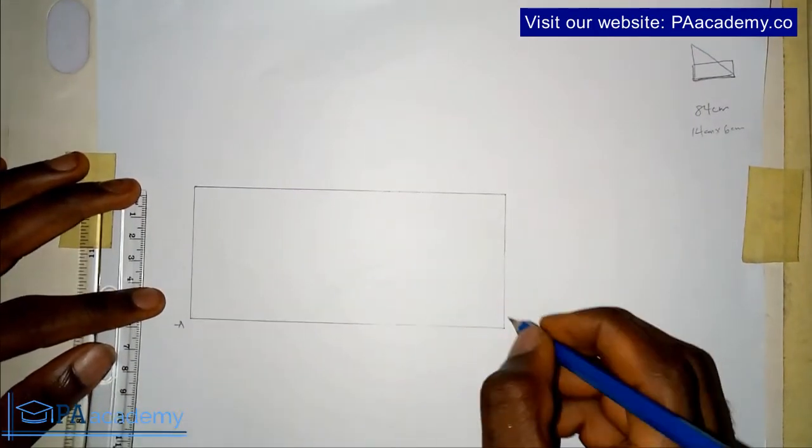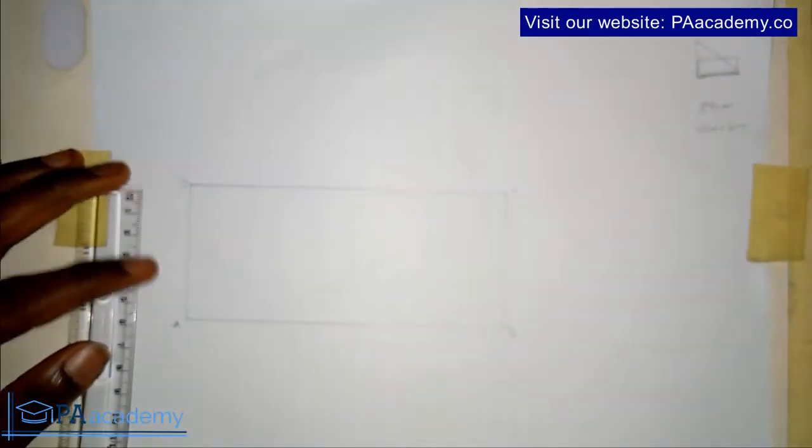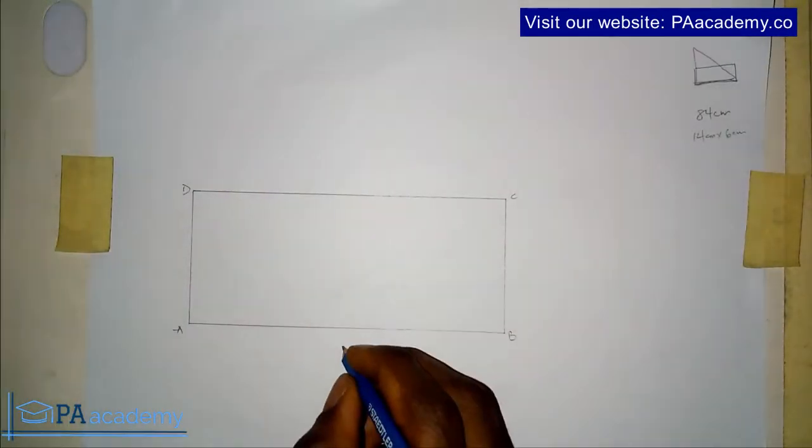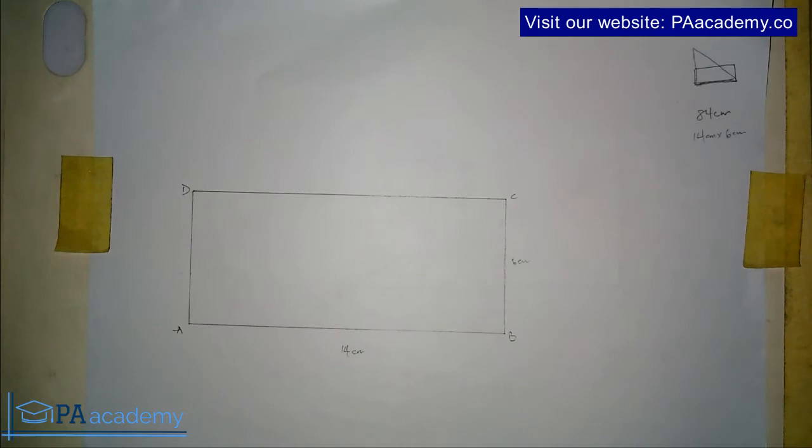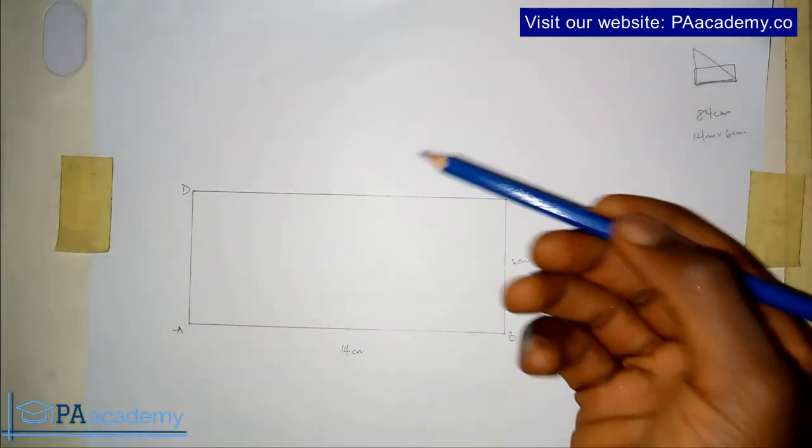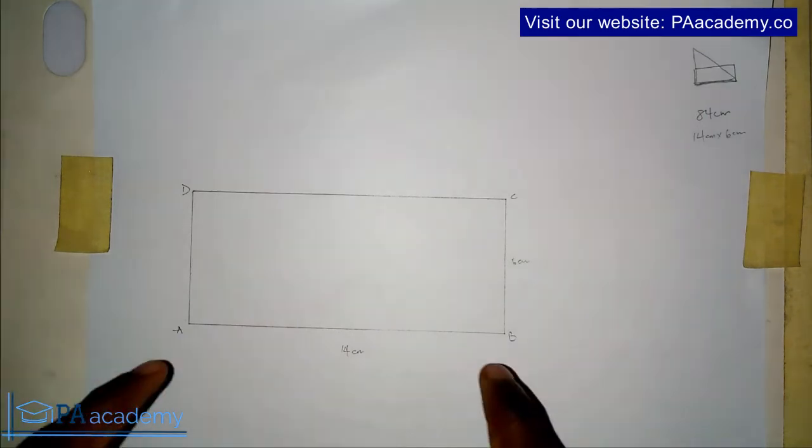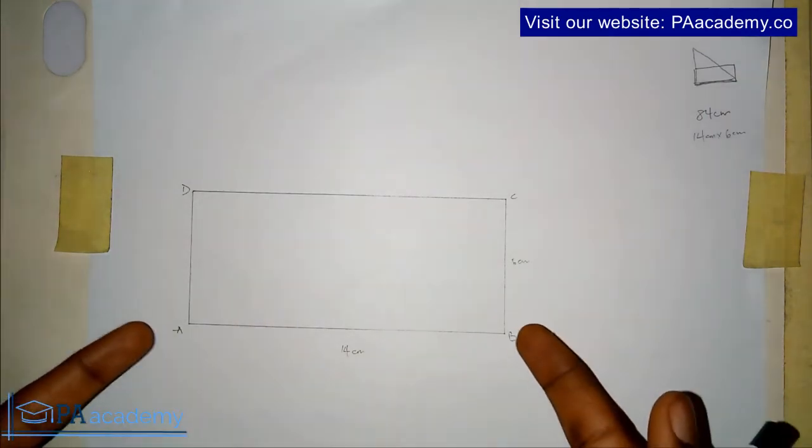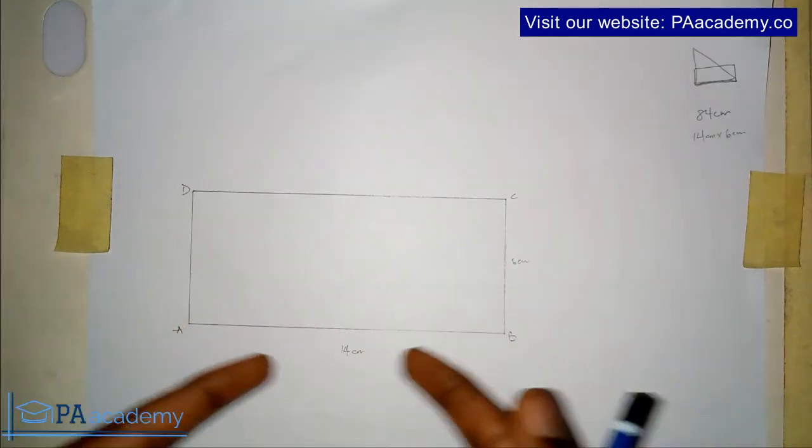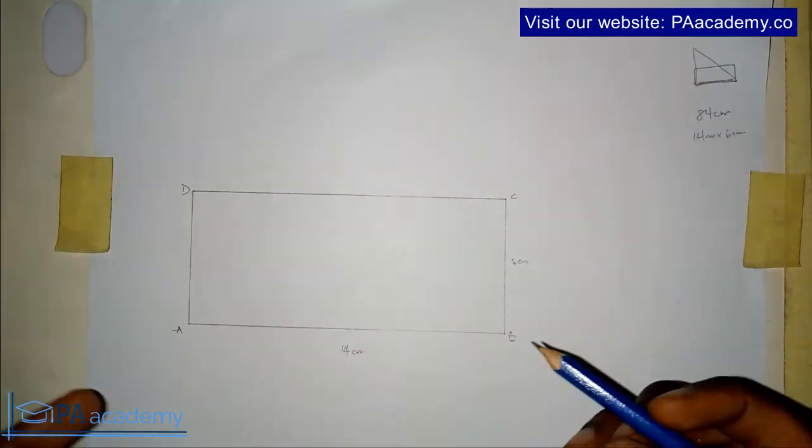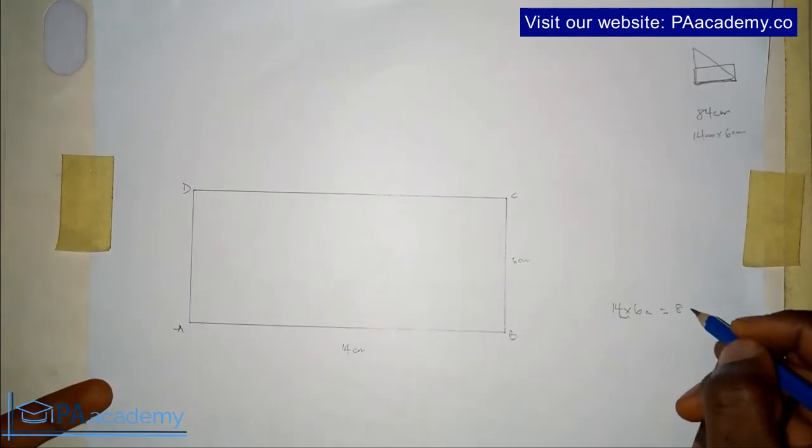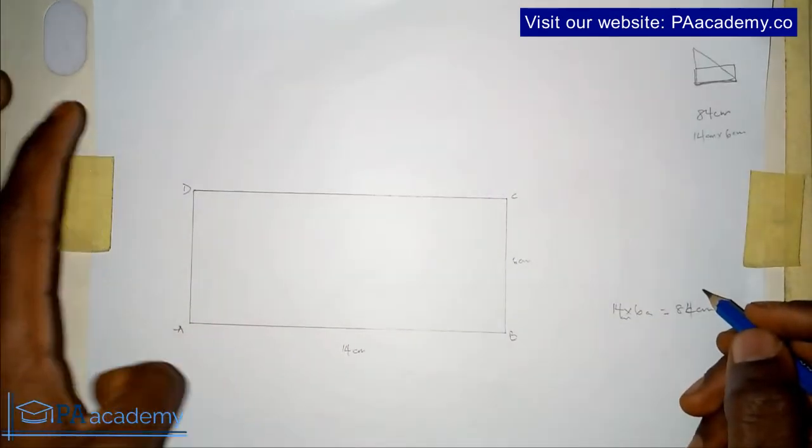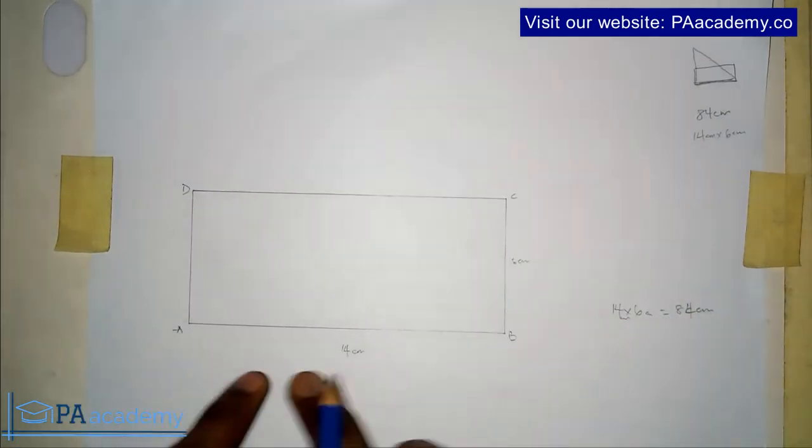So now we have our rectangle that is ABCD. Now we know our rectangle, this side is 14 centimeters, this is 6 centimeters, and the opposite sides are always equal for a rectangle. That means here we are having 6 centimeters and here we're having 14 centimeters.